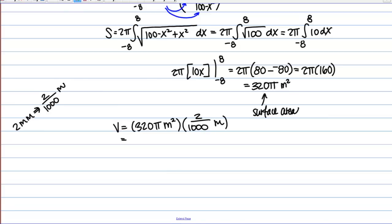Okay, so if I actually go through with my calculations here it looks like I get 640 pi over 1000 cubic meters and if I get an approximate value there it would be the following, 2.01 cubic meters of paint.